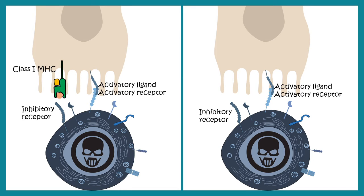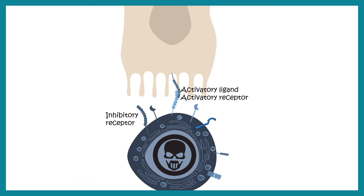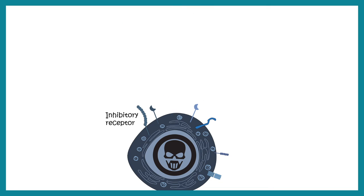There are two types of interactions between an NK cell and a target cell: activatory ligand-receptor interaction, which drives killing, and inhibitory receptor signaling triggered by class 1 MHC expression. If class 1 MHC is expressed, the inhibitory receptor sends a strong signal causing the NK cell to disengage. But if the inhibitory signal is absent — meaning class 1 MHC is absent — it acts like an open accelerator, and the NK cell secretes large amounts of perforin and granzyme, leading to apoptosis of the target cell.